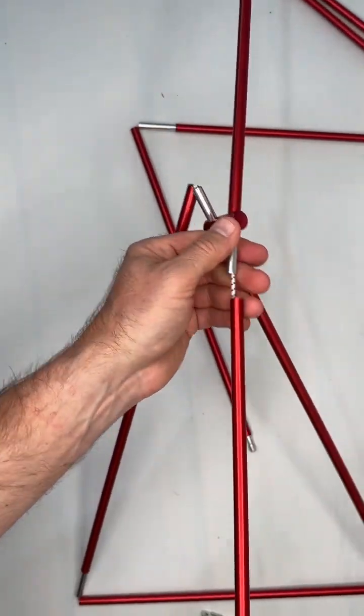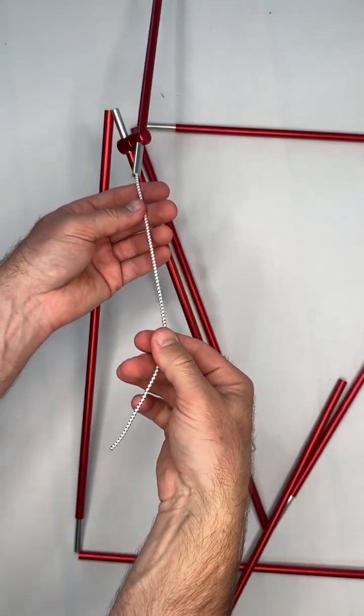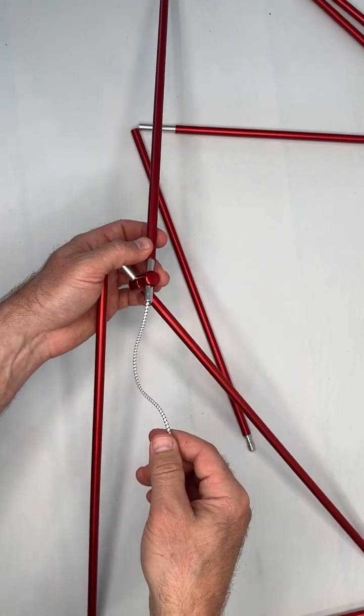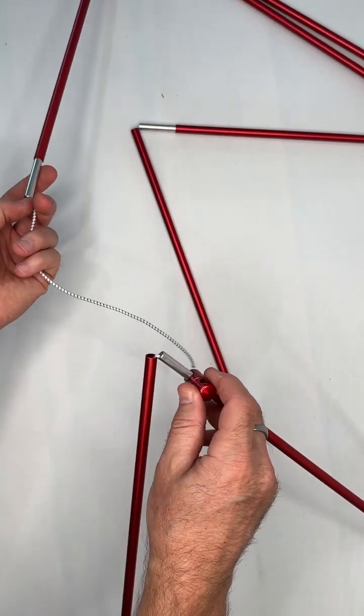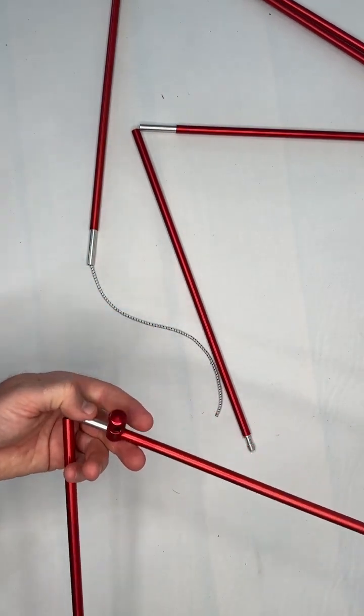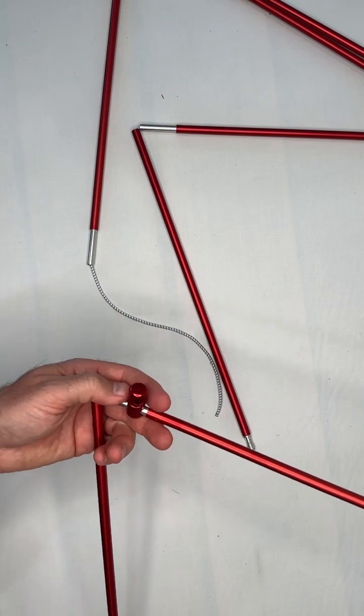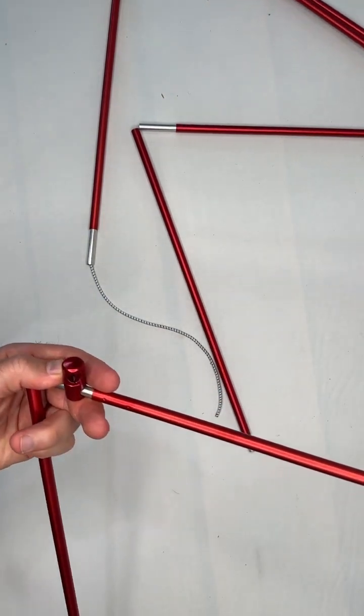Now pull this section away. I have the bungee right here in my hand. Now we can come into the crossbar section and pull this out, and we have one more section that we're going to need to take out as well in order to replace this part if it was broken or the plastic one.